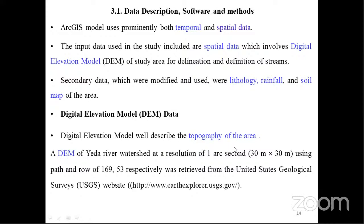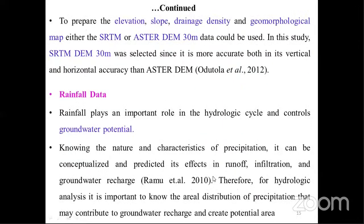Data descriptions and methods: ArcGIS model uses both temporal and spatial data. The input data used in the study includes spatial data involving digital elevation models, study area delineation, and definition of streams; and secondary data modified into lithologies and soil maps. A digital elevation model of Yeda River watershed at a resolution of 30 meters by 30 meters, using path 169 and row 53, was retrieved. To prepare elevation, slope, drainage density, and geomorphological maps, SRTM or Aster DEM 30-meter data could be used.